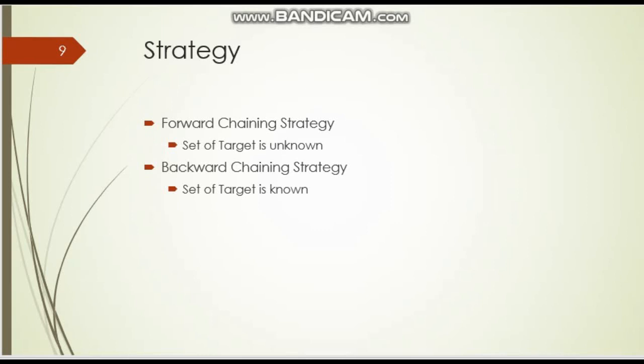In backward chaining, we know how the system works and what the exact answer should be. If we want to design another system based on an existing one, we follow the same pattern — we know all the outputs and based on that we design the inputs. That is the backward chaining strategy.